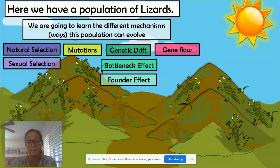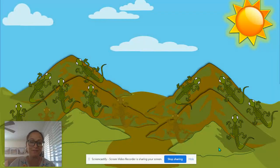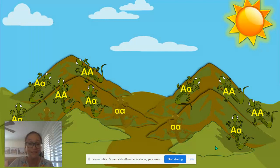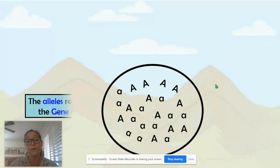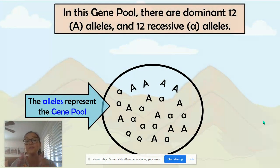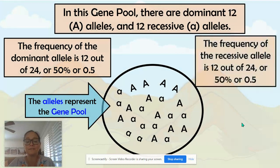So what does it mean to evolve? The definition is: evolution is a change in allele frequencies in a population over generations or over time. Here we have our population of lizards and here are their genes or their alleles. All of these alleles within this population make up what we call a gene pool. In this gene pool, there are 24 alleles total. We find that 12 of the 24 are dominant alleles, which makes the frequency of that dominant allele 50% or 0.5. Then the frequency of the recessive allele is also 0.5 or 50%, 12 out of 24.